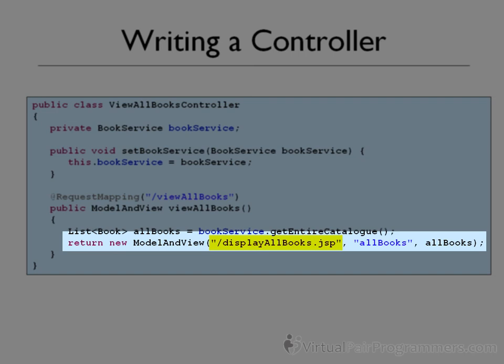For the return, we return an instance of ModelAndView. There are three parameters into the constructor of this class. The first parameter is the name of the view that we want the dispatcher servlet to forward to once the controller has finished — for now, this is just going to be the name of a JSP page, which we still need to write. The next two parameters are the results of the use case: the list of books held in a collection called allBooks. We need to give the results a friendly name — this is the label we're going to use inside the JSP page. You're going to see that pattern used quite often where the parameter name matches the variable name, but really it's just a label.